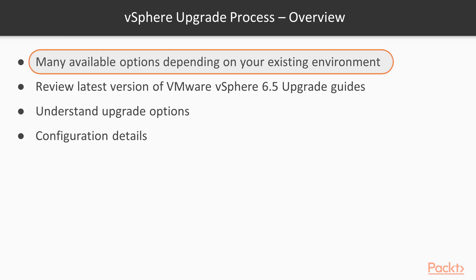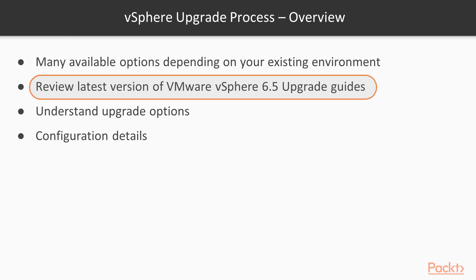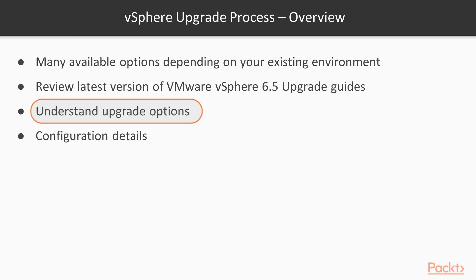Depending on the existing environment, there are many available options. The best way to go about it is to review the latest version of the VMware vSphere 6.5 upgrade guides. They give you a step-by-step procedure depending on what your current environment is, and based on that, you can understand your upgrade options. Many folks want to take a staged upgrade, going from vSphere 5.5 to 6.0 to 6.5, although it is possible to move directly from vSphere 5.5 to vSphere 6.5.